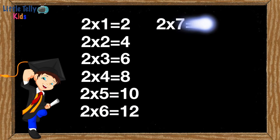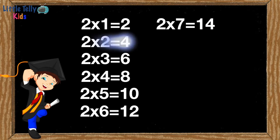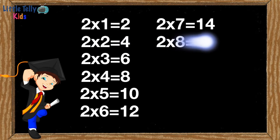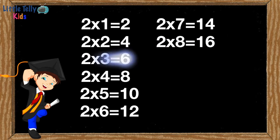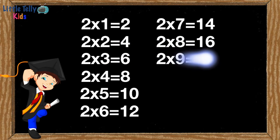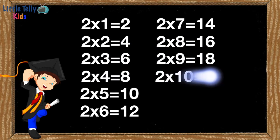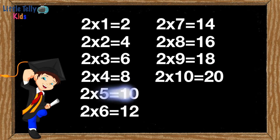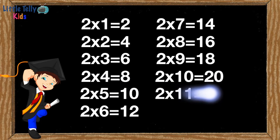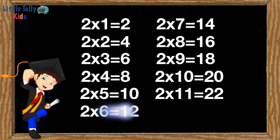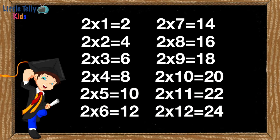Two sevens are fourteen. Two eights are sixteen. Two nines are eighteen. Two tens are twenty. Two elevens are twenty-two. Two twelves are twenty-four.